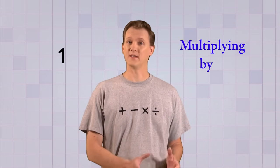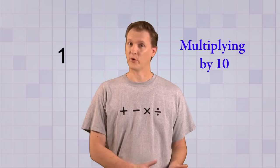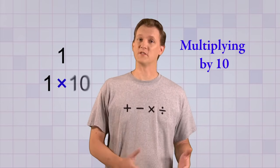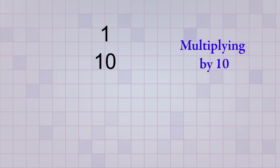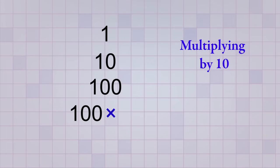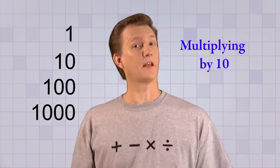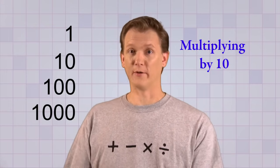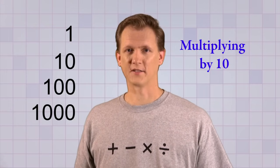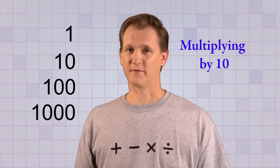Our first building block is 1, and we can get bigger building blocks just by multiplying by 10. So our next building block is 1 times 10, or 10. And the one after that is 10 times 10, or 100. And the one after that is 100 times 10, which is 1000. I could keep on multiplying by 10 to get bigger and bigger building blocks, but I'm going to stop at 1000 for now.